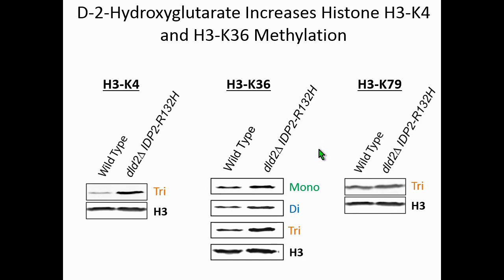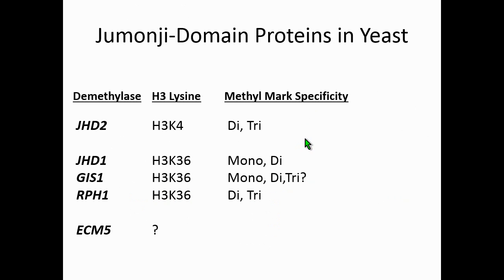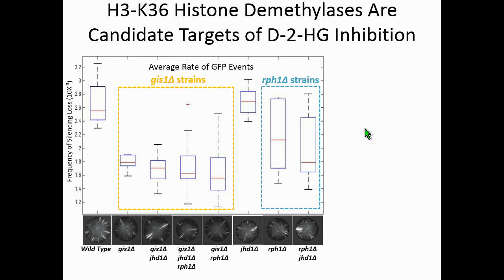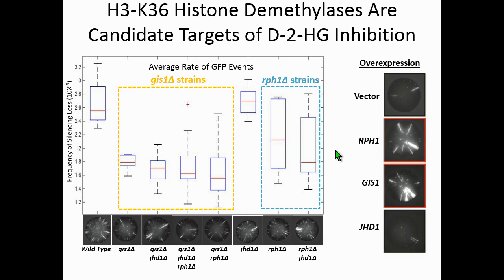The next thing I wanted to ask was which methylation mark is potentially relevant to the silencing effect—H3K4 or H3K36? The logic of this experiment was to delete all known Jumonji domain-containing proteins in yeast—there are five of them—and ask whether deletion of any particular one mimics the phenotype of increasing D2-hydroxyglutarate. When I did that, I saw a mimic of increased silencing when I deleted GIS1 or RPH1, which are demethylases that act on H3K36. The reverse experiment—overexpressing these demethylases—showed the opposite effect where silencing is destabilized.